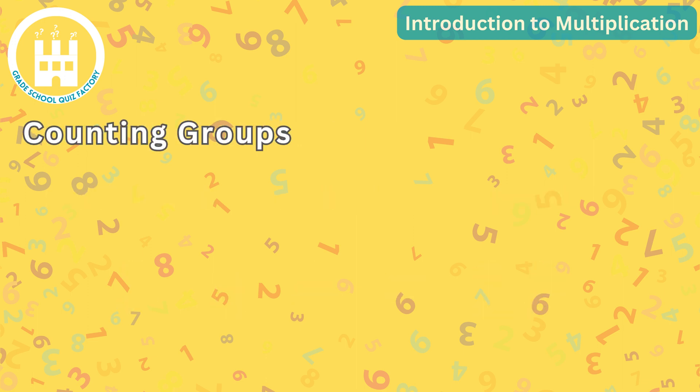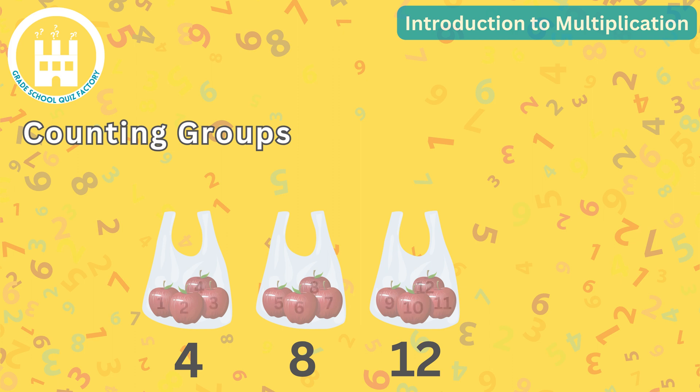One helpful technique when first learning multiplication is to count groups. Imagine you have a bag with 4 apples and you have 3 such bags. How many apples do you have in total? Let's count the groups: 4, 8, 12. So you have 12 apples in all. We can also write this as 3 times 4 equals 12.